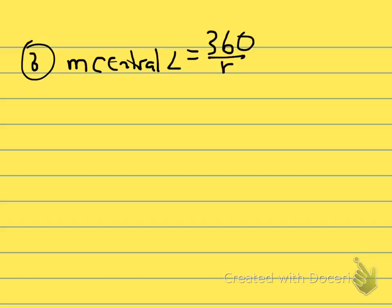On problem number three, we want to measure the central angle of a regular polygon with 40 sides. Again, on your formula sheet, it says that the measure of a central angle is 360 over N. And N is the number of sides. So this is going to be 360 over 40 sides gives us a central angle of 9 degrees.